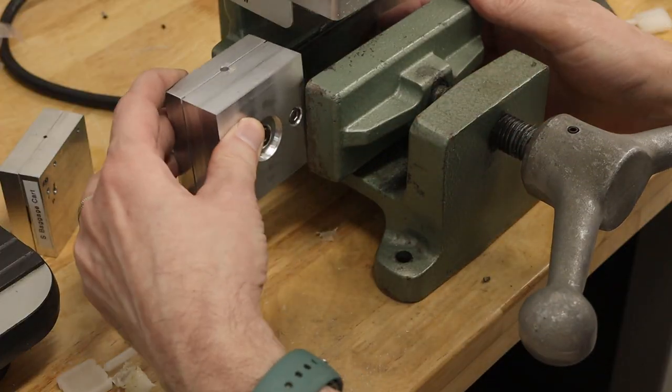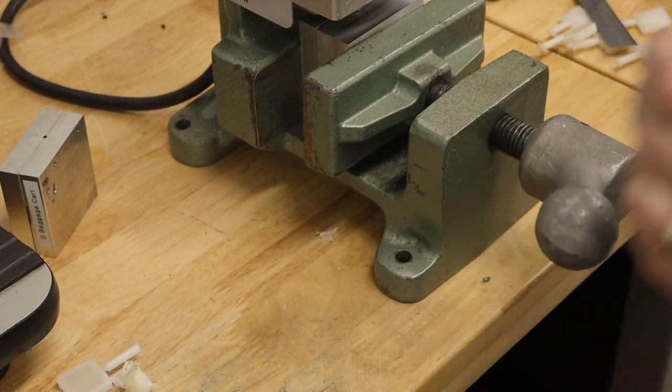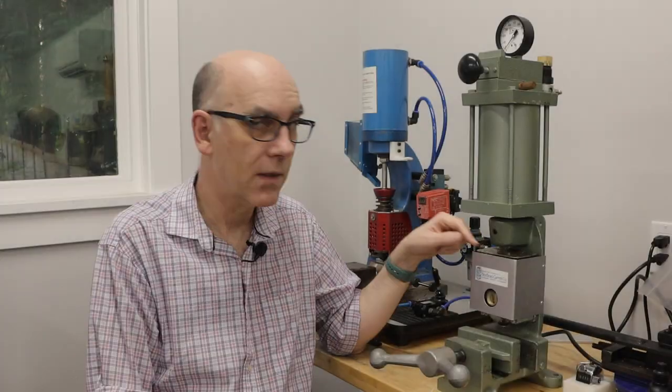When I put the mold back in the machine, I have to visually align it so that it's centered under the sprue, and then clamp it in place.